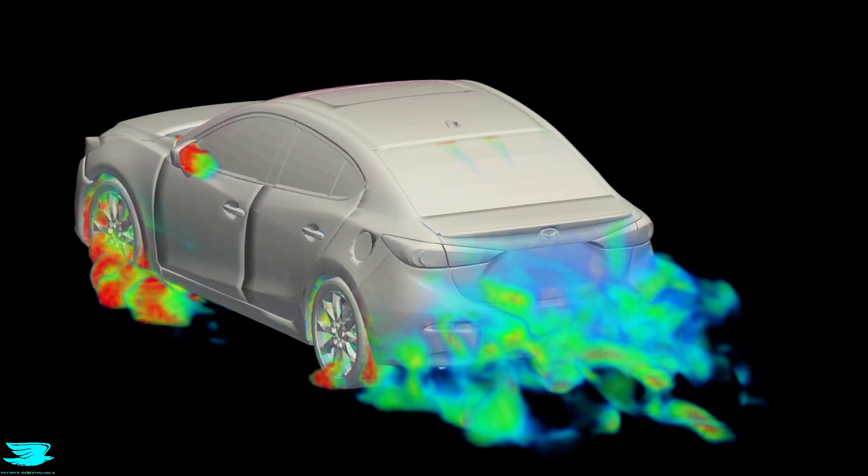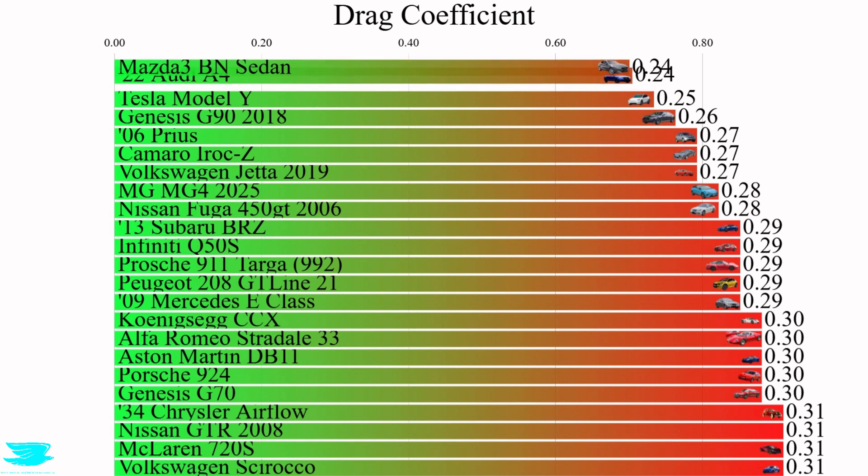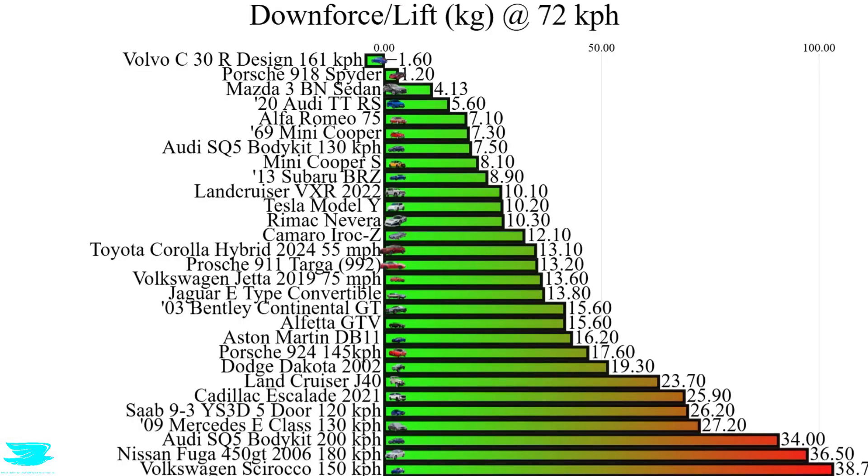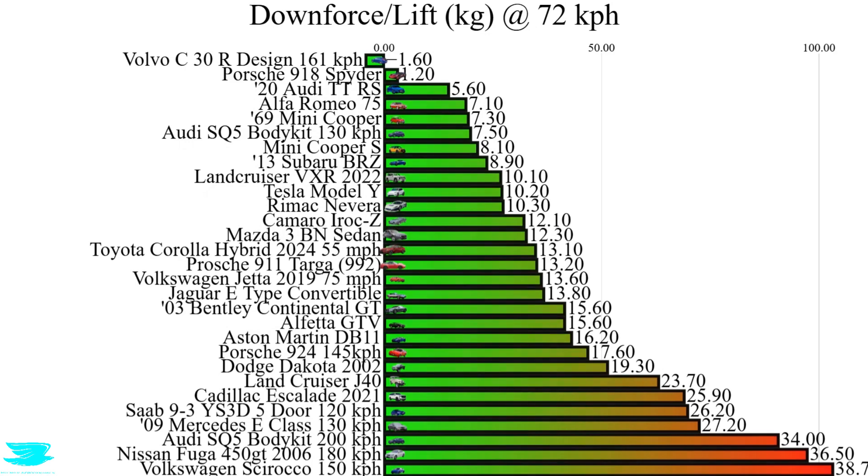What's more, while the Mazda already does pretty well with the drag coefficient, the lift is kind of a different story. At 72 kph, it produces 12.3 kilos of lift. That isn't great. I mean, there are many cars on the list that produce more lift, but that is at higher speeds too. Here, 72 kph isn't that high, but 12.3 kilos is. So the car has a problem with lift.